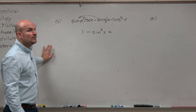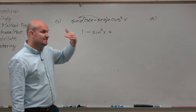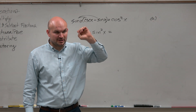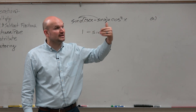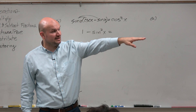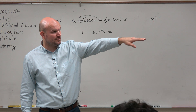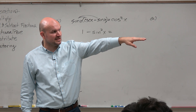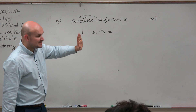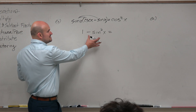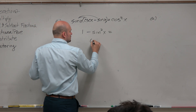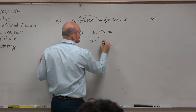Now, whenever I see a function squared, I immediately start looking at my Pythagorean identities. My famous Pythagorean identity is sine squared plus cosine squared equals 1. So therefore, if I subtract sine squared from both sides, I get cosine squared of x.